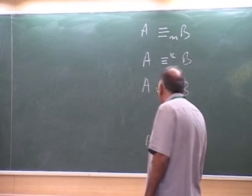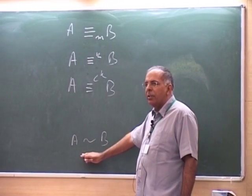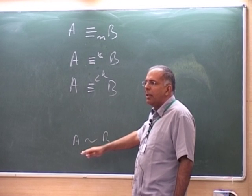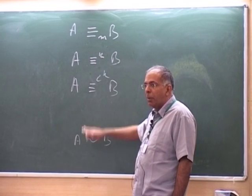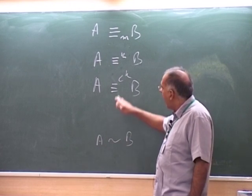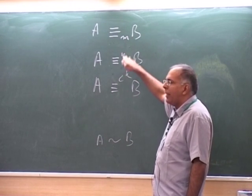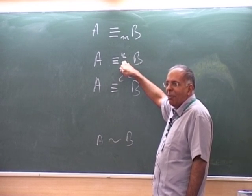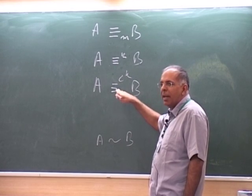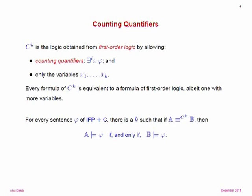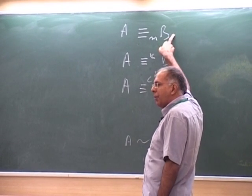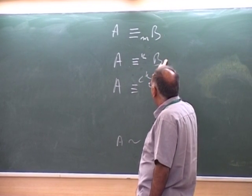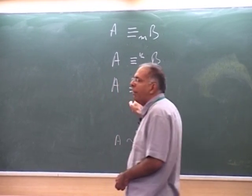Everything we do is invariant under isomorphisms, and these equivalence relations can be seen as polynomial-time-computable approximations from below of the isomorphism relation — while actual isomorphism we don't know is polynomial-time-computable. The first-order and fixed-point equivalences are clearly far from actual isomorphism, but C^k-equivalence starts to get more interesting in that regard.